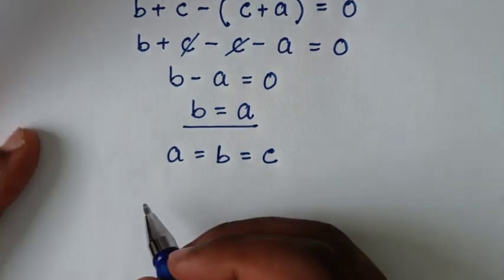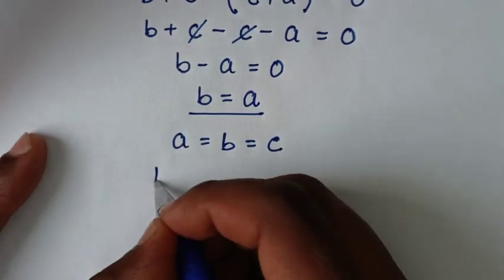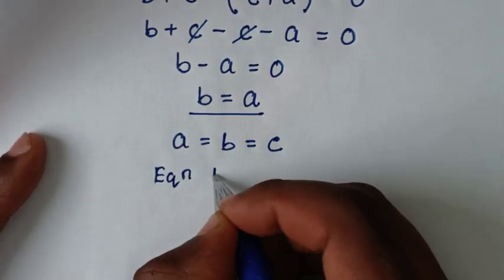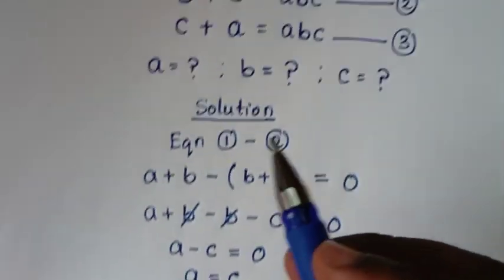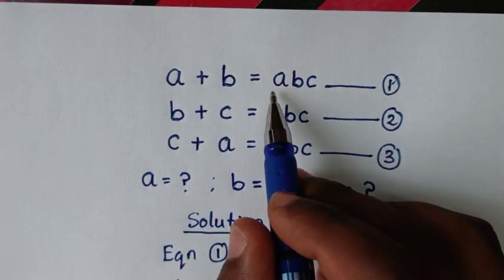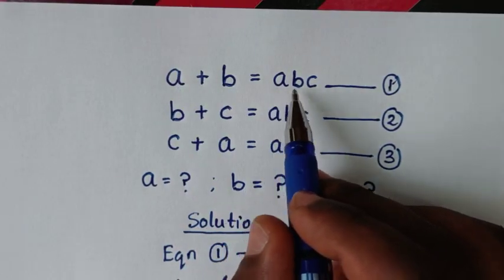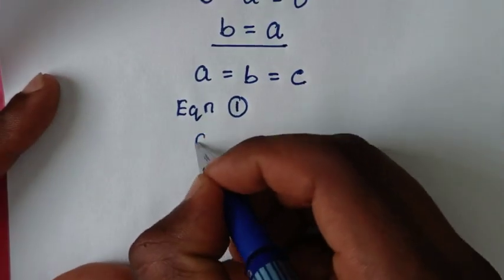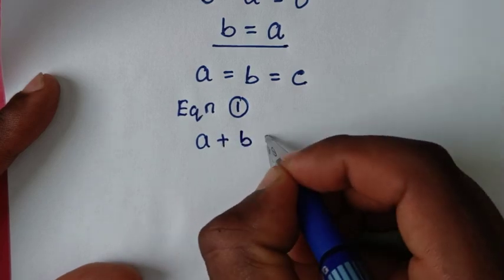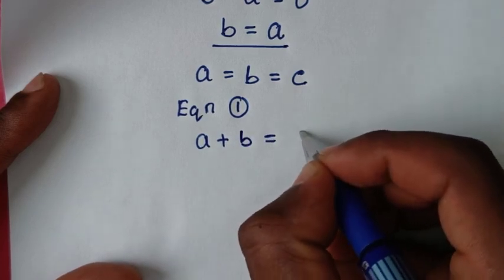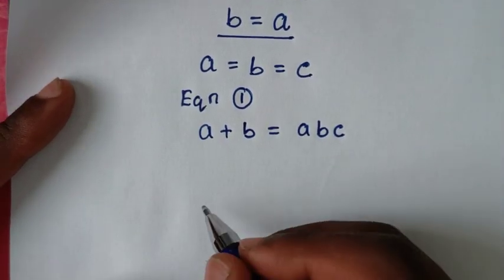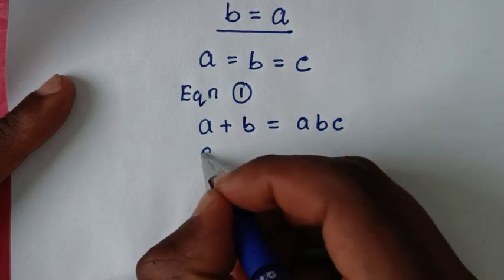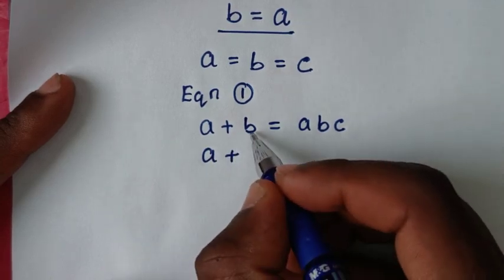So from here we have a is equal to b and a is equal to c, meaning a is equal to b is equal to c. Then we'll use equation 1, which is a plus b is equal to abc.